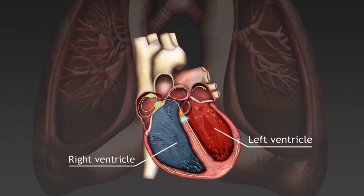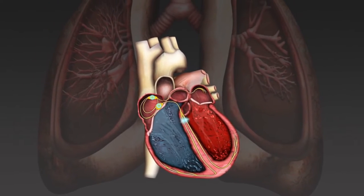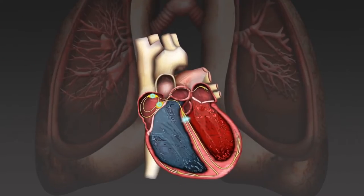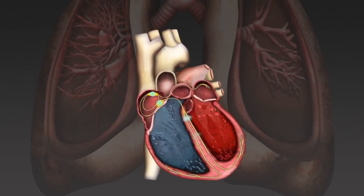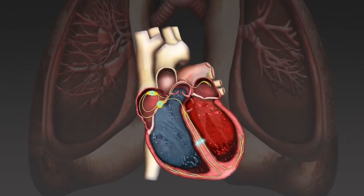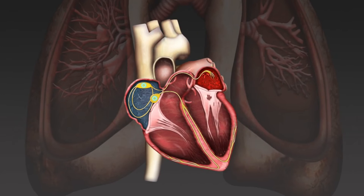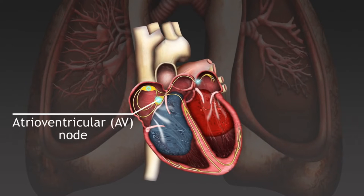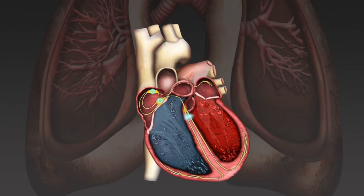The heartbeat happens as follows. 1. The SA node, called the pacemaker of the heart, sends out an electrical impulse. 2. The upper heart chambers, or the atria, contract. 3. The AV node sends an impulse into the ventricles. 4. The lower heart chambers, or ventricles, contract or pump.